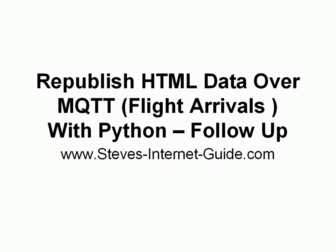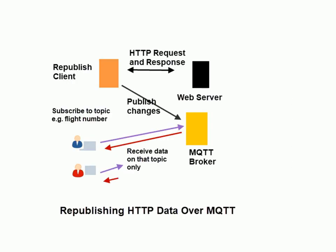Hi. In an earlier video I showed you how to republish HTML data over MQTT, and we used the flight arrivals example. I wrote a Python script to republish that data. We had our web server publishing the data using HTTP — this is the norm today — and we put a republishing client here, written in Python. It took the data, converted it from HTTP, sent the changes over to the MQTT broker, and anyone connecting to that MQTT broker could receive the changes. I showed you that with a Python MQTT client.